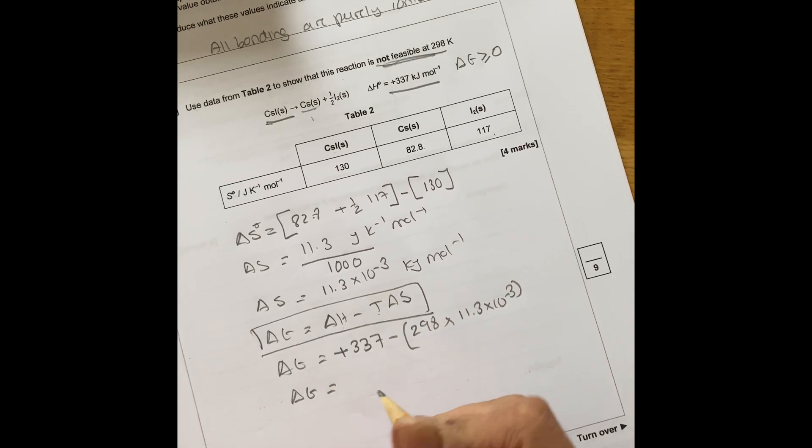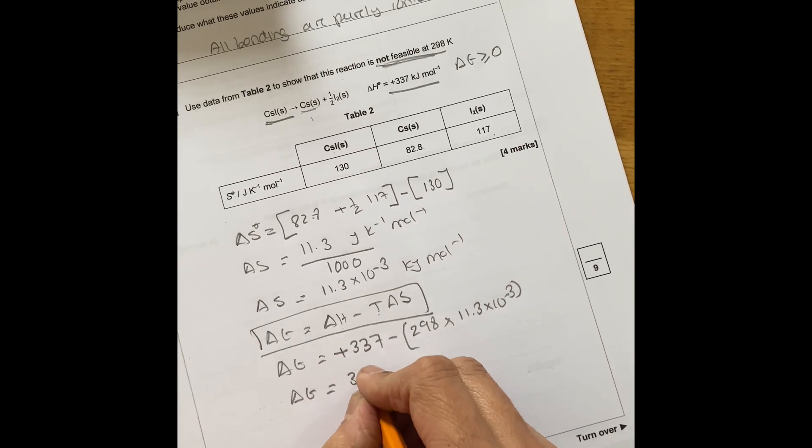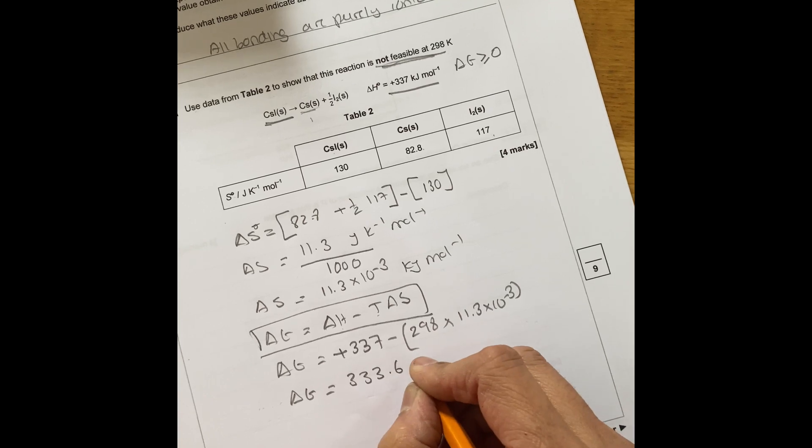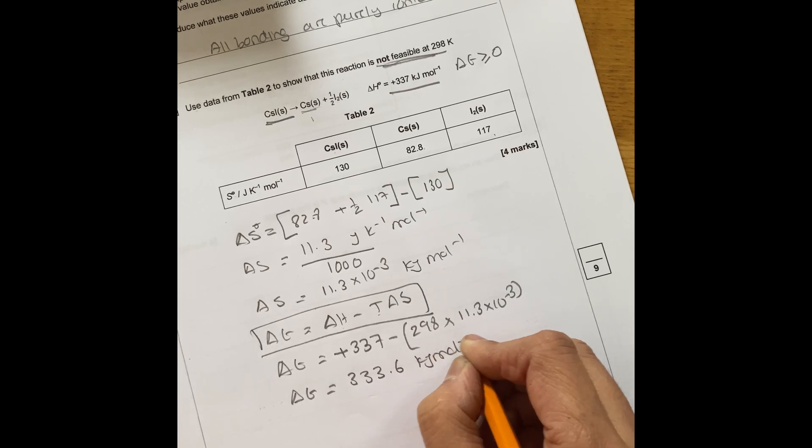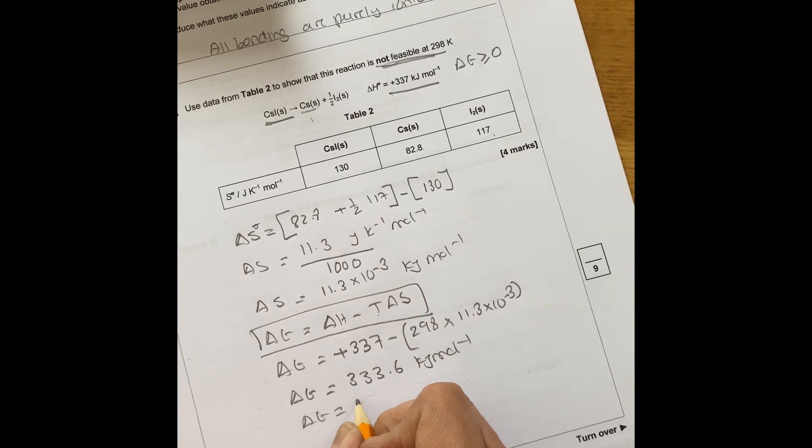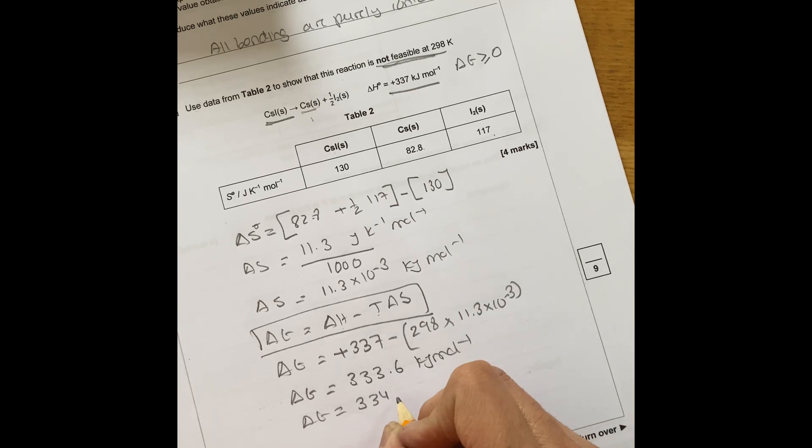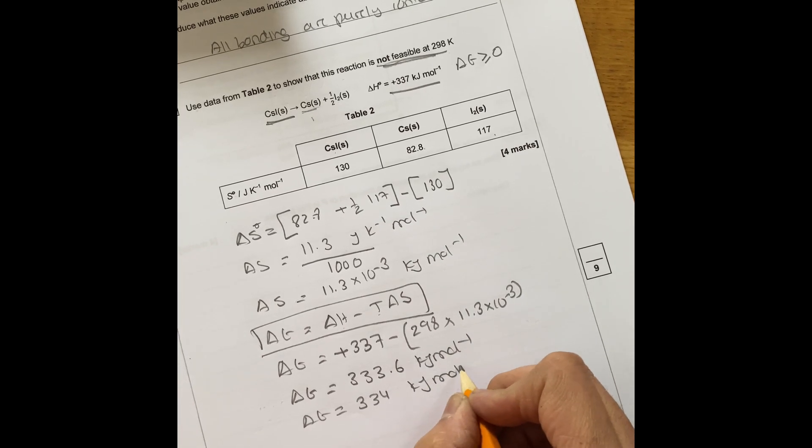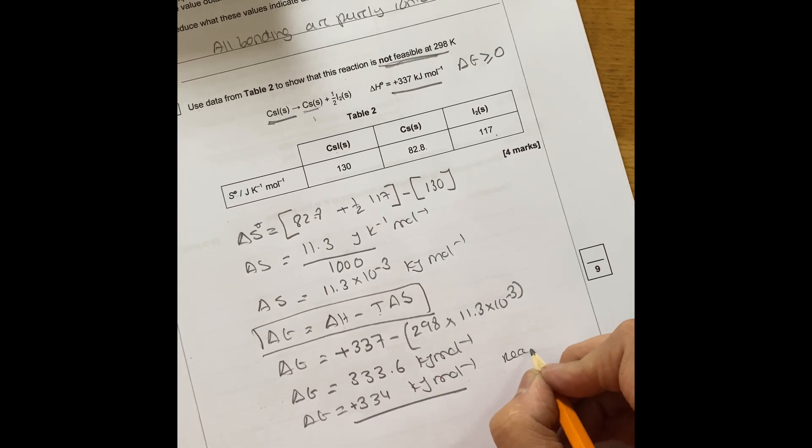So that gives you delta G as 3.36 kilojoules per mole. Therefore, delta G is 3.34 to three significant figures, kilojoules per mole. Because delta G is positive, reaction is not feasible.